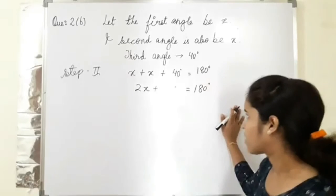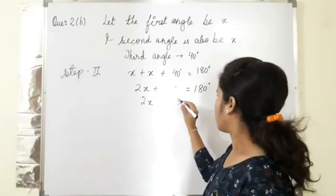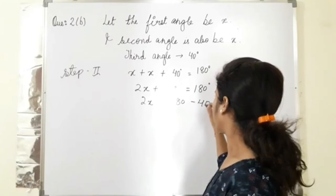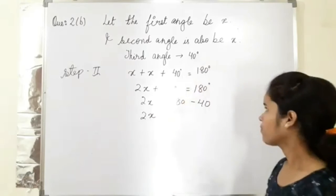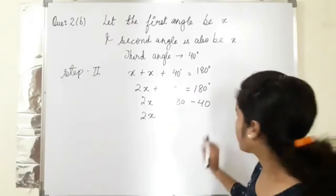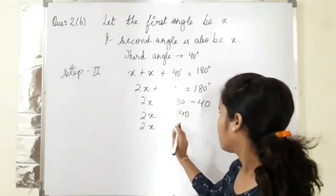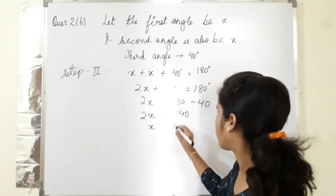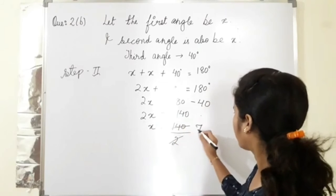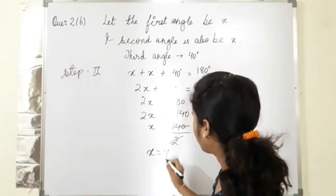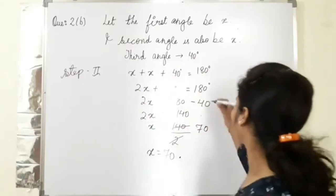Now quickly comment and tell me what is the answer, the value of x. 2x equals 180 as it is, plus 40 goes to the other side, so minus 40. 2x equals how much? 180 minus 40 is 140. So 2x equals to, x equals to 140, multiply becomes divide, so we get x equals to 70 degrees.